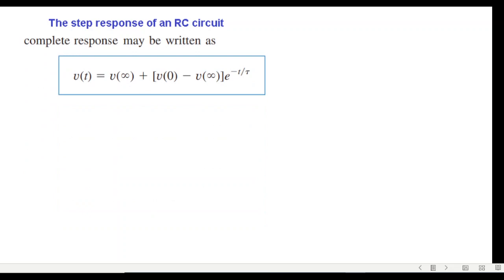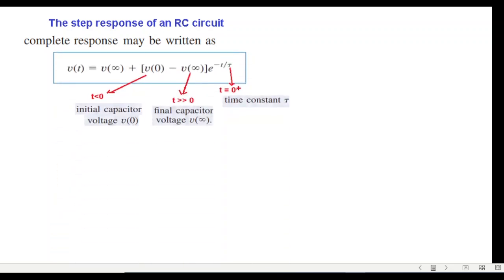I'll use the formula straight away for this question. When t is less than zero, this is the voltage across the capacitor. When t is greater than zero, this is the voltage across capacitor. I need to calculate the time constant tau.